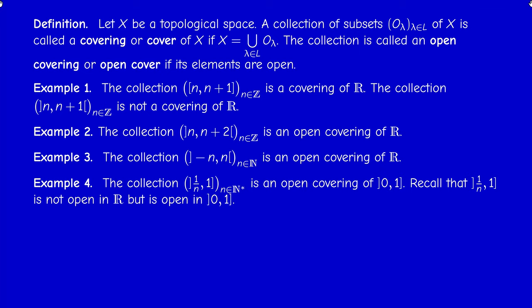This next example can be a little confusing. Consider the semi-open interval (0, 1] — open at zero, closed at one — as a metric space with its own distance and its own relative topology. The interval (1/n, 1] is not open in R, but as we already observed, it is open in the space (0, 1]. When we take the union of all these sets as n goes from 1 to infinity, we get precisely (0, 1]. So we have an open covering of (0, 1] by open sets of (0, 1], not by open sets of R.